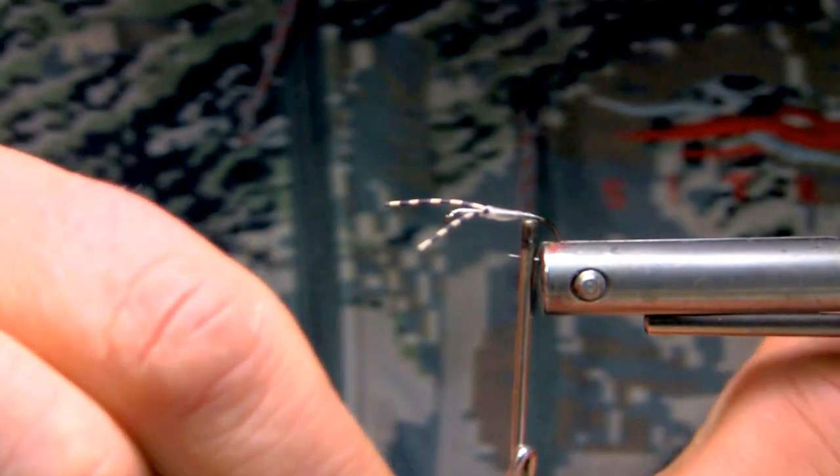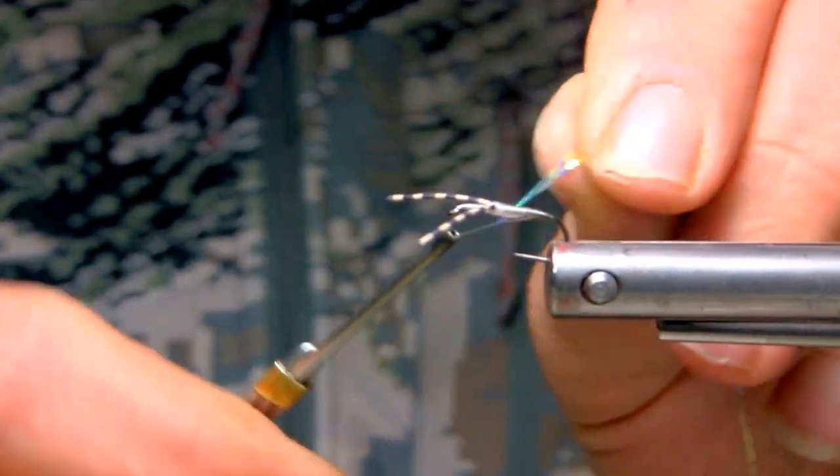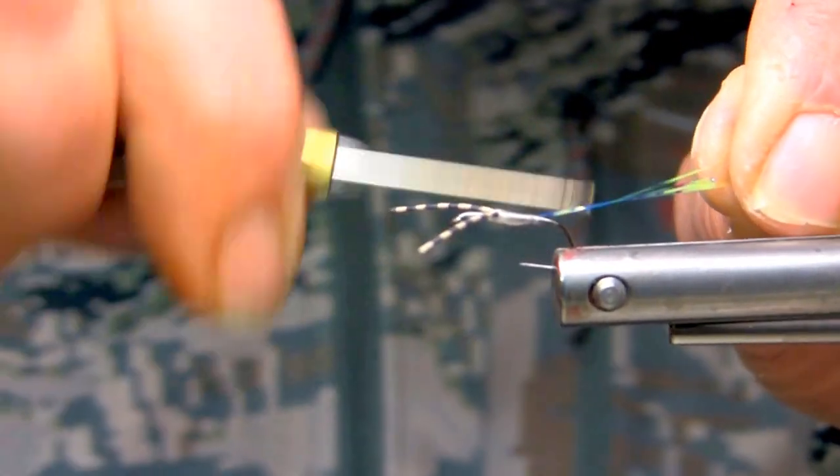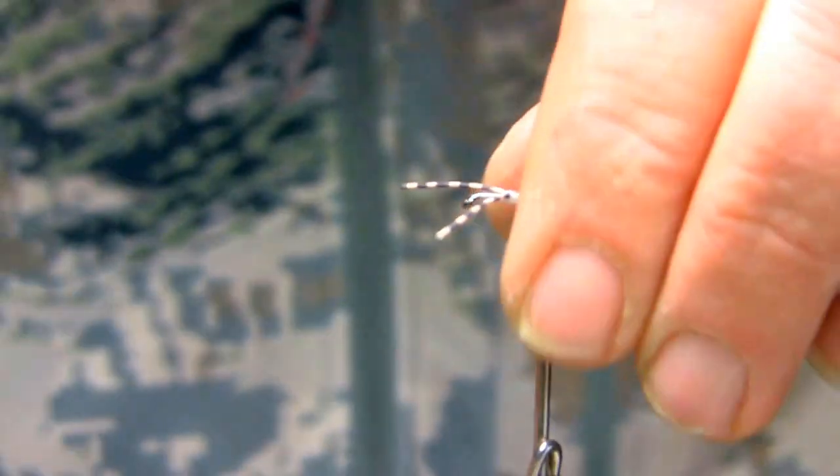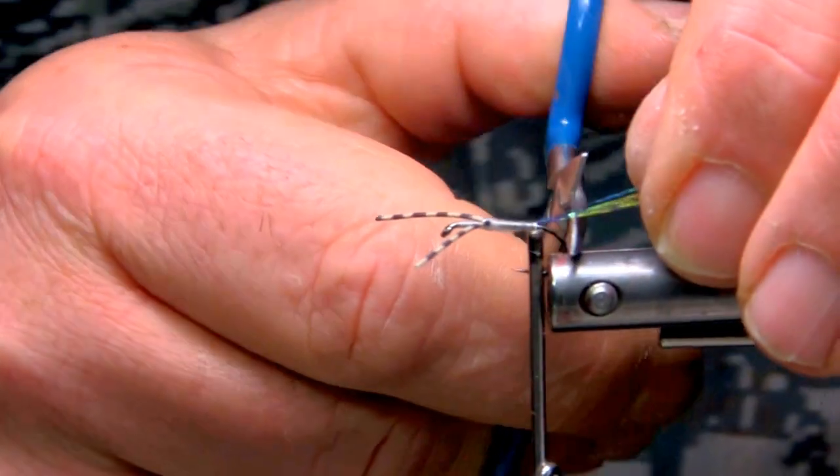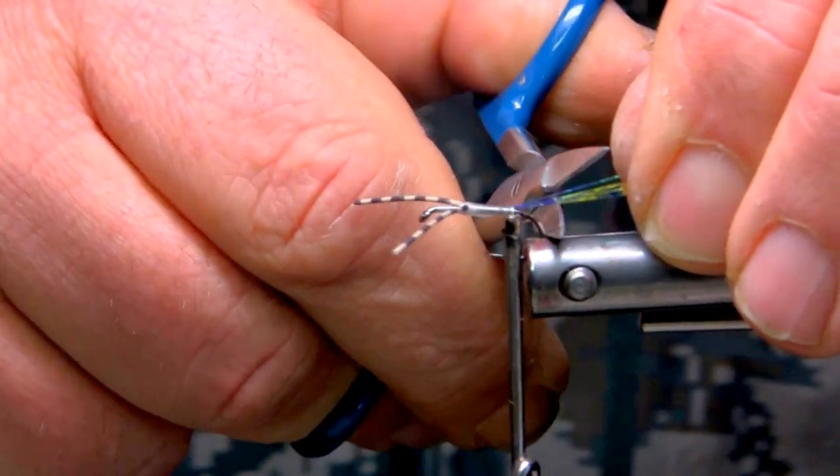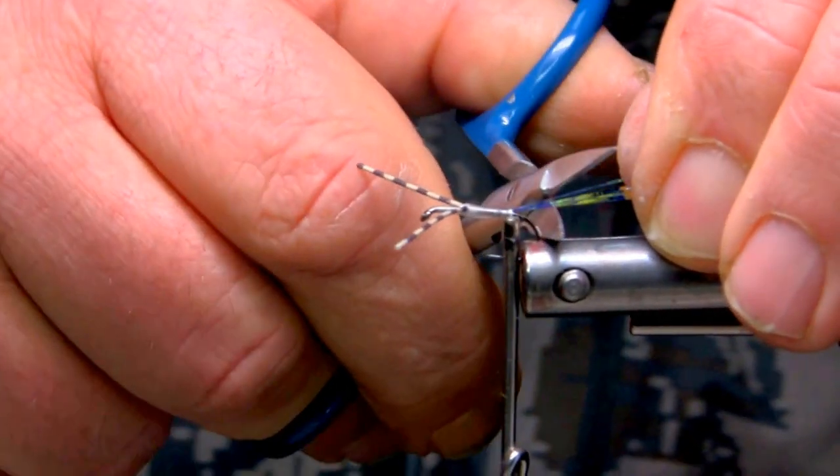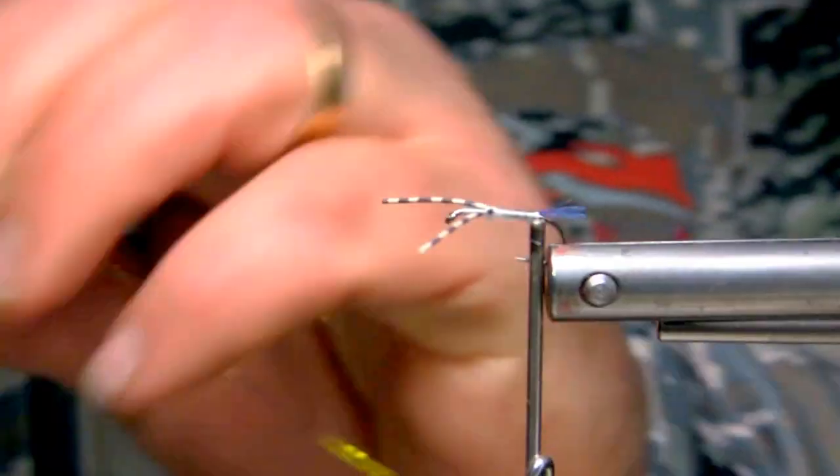So now I'll take for a tail three to four pieces of crinkle flash, lay them in on top and tie them back slightly. Bring the material, clip it off, put my scissors in at the back of the bend, lay them to a 45 degree angle and cut and that's a good length there.